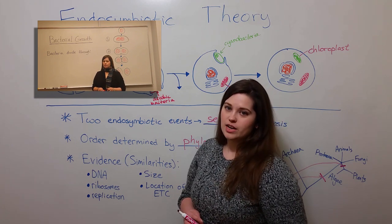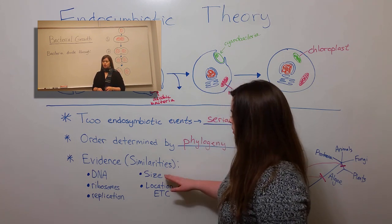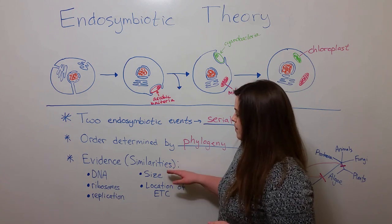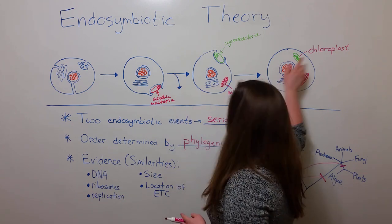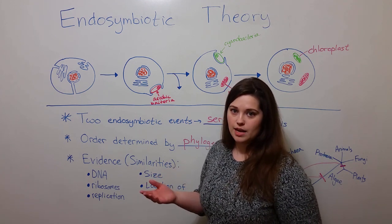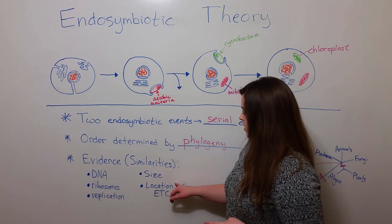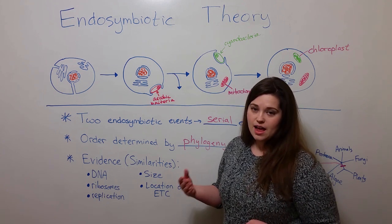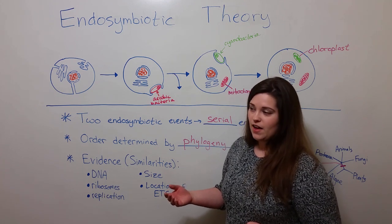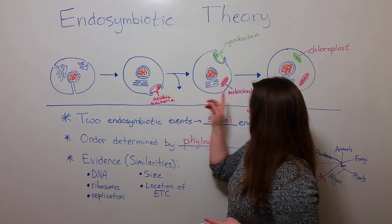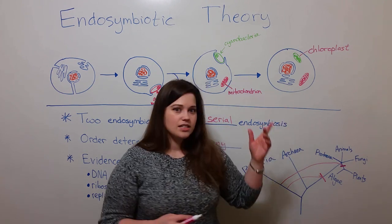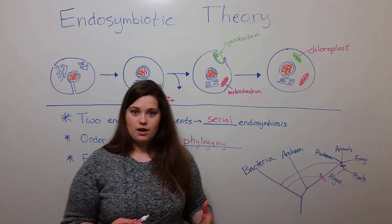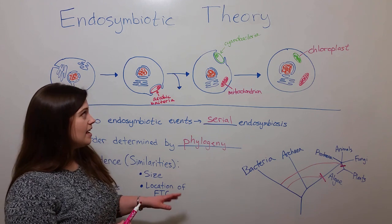There's also their size. Most eukaryotic cells are about 100 micrometers, whereas bacteria cells, as well as mitochondria and chloroplasts, are closer to 10 micrometers — so the sizes are similar as well. And finally, the location of the electron transport chain: the electron transport chain, used in aerobic respiration, is found in the internal membranes of the mitochondria and chloroplasts, suggesting again that these organelles are descendants of bacteria capable of aerobic respiration.